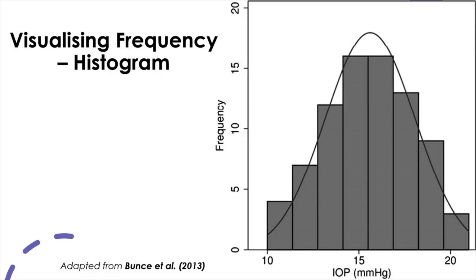The histogram is used for continuous data, which is why the bars are touching — to show that the variable being displayed is continuous and there is no gap in the measurement. On the other hand, bars in the bar graph are not touching each other because they represent discrete categories and are not supposed to be continuous. That is the major difference between the bar graph and the histogram.